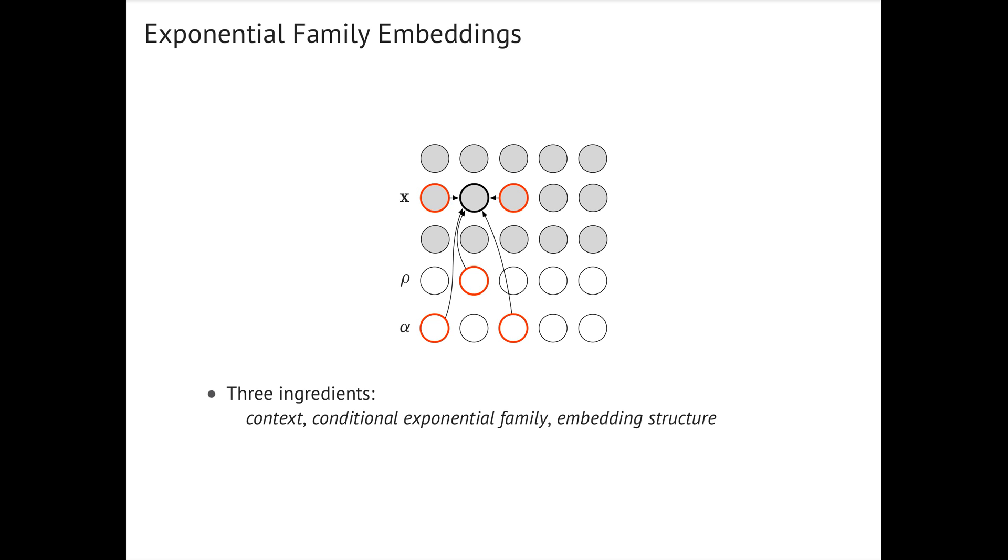In language, the context is the surrounding words. In neuroscience, the context is close by neurons. And in the market basket data, the context is other items in the same shopping cart.